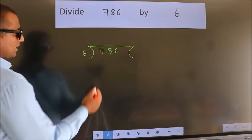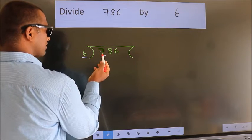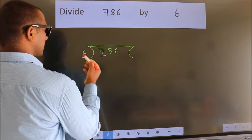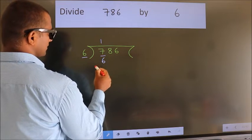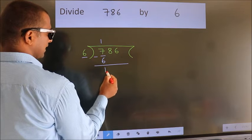Next. Here we have 7. Here 6. A number close to 7. In 6 table is 6 ones, 6. Now we should subtract. We get 1.